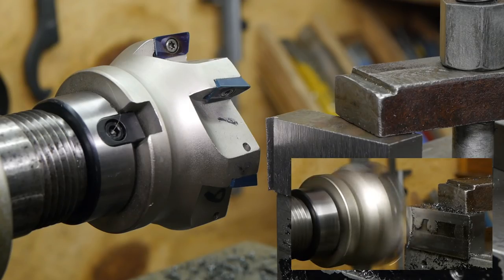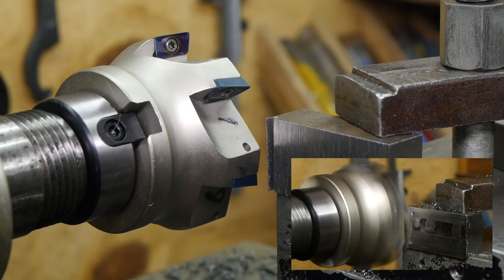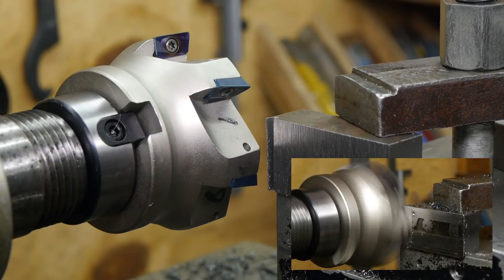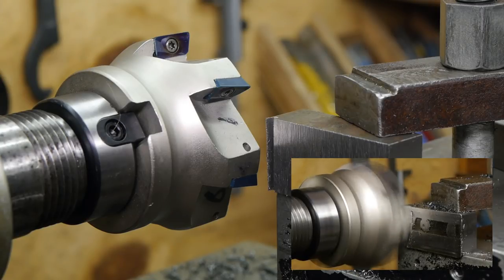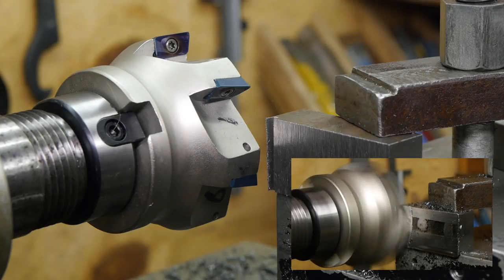The last time I used these blue nano inserts on something really hard, a quick change tool post holder. They managed to get the job done, but lots of chunks broke off. So let's see how they work on this softer steel.